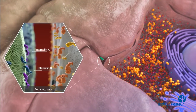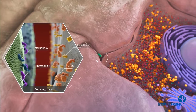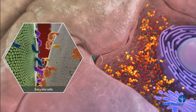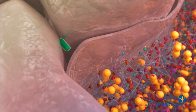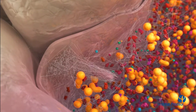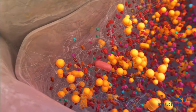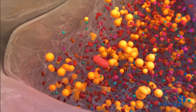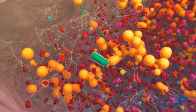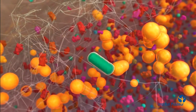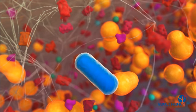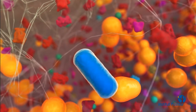The bacterium binds to the receptors E-cadherin and C-met on the cell membrane and triggers cytoskeletal rearrangements, leading to internalization into the cytoplasm. Once inside the cell, the bacterium secretes LLO and phospholipases to rupture the membrane of the internalization vacuole. It also modifies its surface and becomes resistant to the cell's inner defenses, such as autophagy.